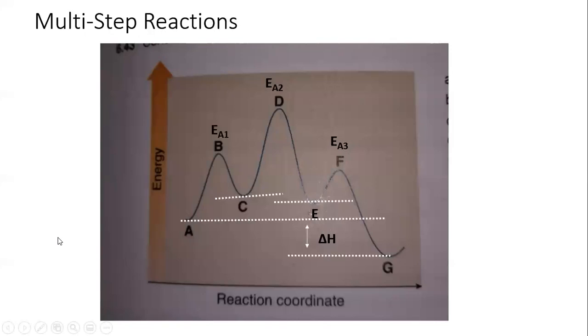So for multi-step reactions, you can see multiple transition states. Every peak you see is referenced to a transition state. So what this would tell you is that this reaction has one, two, three states, or three steps. So each step has its own transition state.